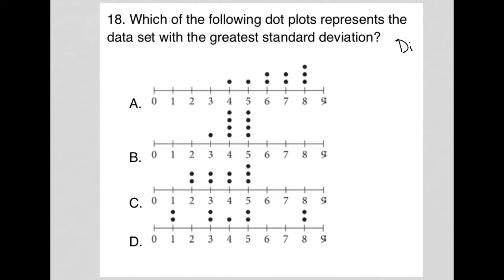So this question is a diagram question. The question says, which of the following dot plots represents the data set with the greatest standard deviation? There's a whole formula for calculating standard deviation, and you may even be able to use your graphing calculator to do so. But when I see a visual representation like a dot plot and I'm asked about standard deviation, I'm really just thinking about spread.